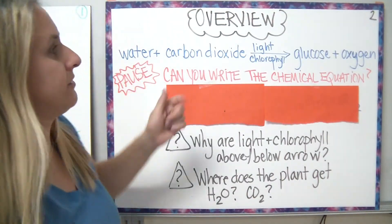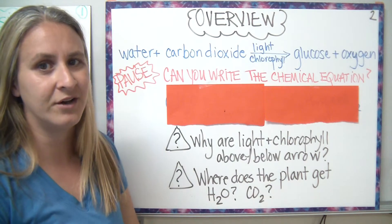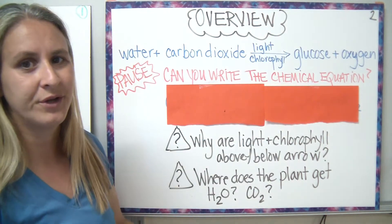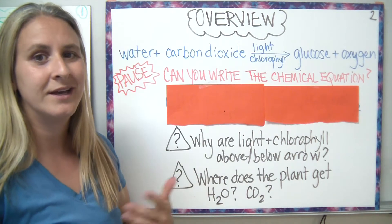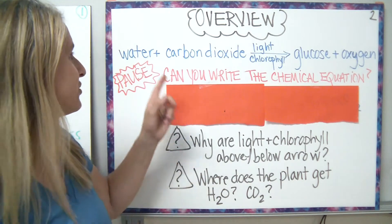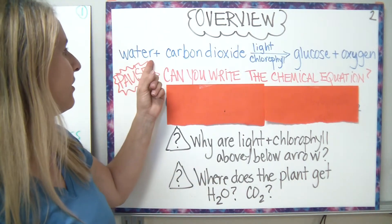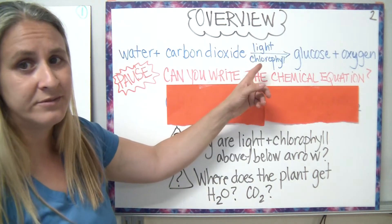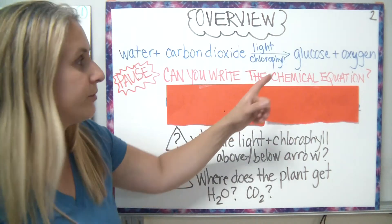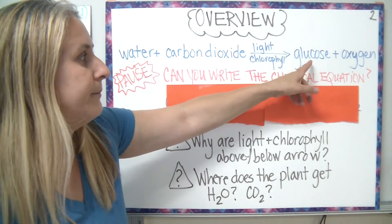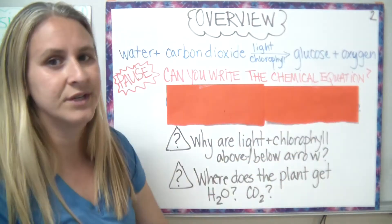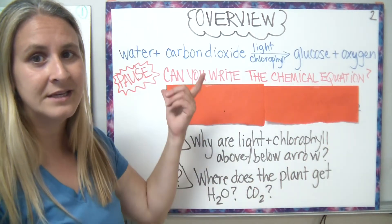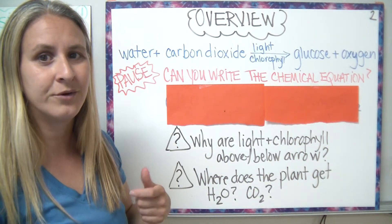Let's take a look at the reaction itself. I wrote out the word equation for the reaction, and we'll go through that quickly, then try to do the chemical reaction with the formulas. We start off with water and carbon dioxide. We're going to need light and chlorophyll — remember, chlorophyll is found in the chloroplasts. In the end, we're going to make glucose and oxygen. Everything to the right of the arrow are your products; the things to the left of the arrow are your raw materials.